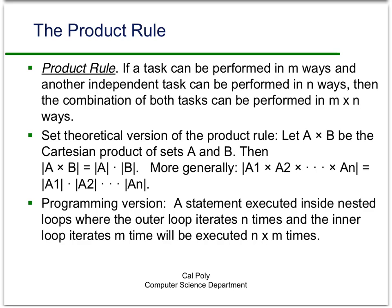The version of the product rule you'll be using most often in the next few years of your computer science curriculum is the programming version. Namely, if you have a statement executing inside a nested loop and the outer loop iterates n times and the inner loop iterates m times, then that statement will be executed n times m times.